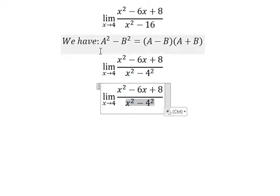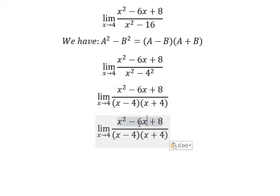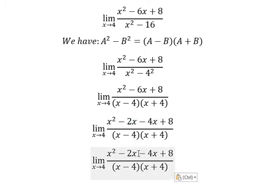So we have (x - 4)(x + 4). About this one, we need to create the factorization. So -6x, I can put into -2x and -4x. x and x, we can do factorization in here.